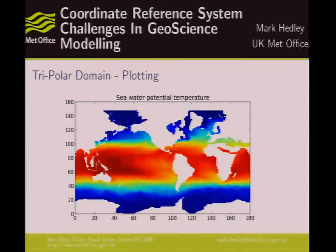I showed you earlier a nice plot of the rotated pole data in its own domain with coastlines warped around it. This is a plot of the ocean model seawater potential temperature near the surface — you can see kind of where the world is — but because we don't currently treat this as a true coordinate reference system, we can't use the same tool to plot the coastlines. There are some interesting features particularly around Africa — if you know your African geography, that's not a good representation.